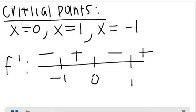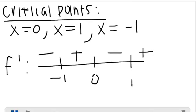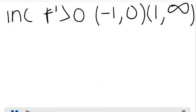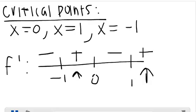Now that we have the critical points, we can find where f is increasing and decreasing. f is increasing when f prime is greater than 0. Looking at our number line, f prime is greater than 0 on the intervals negative 1 to 0 and 1 to infinity. f is decreasing when f prime is less than 0 — on the intervals negative infinity to negative 1 and 0 to 1.